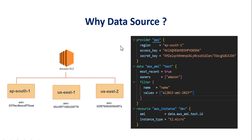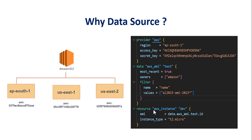Why should we use data sources? Suppose we have to create an EC2 instance across three regions: ap-south-1, us-east-1, and us-east-2. As we know, in AWS the AMI ID is region-specific. One approach is to hardcode the AMI ID in the resource block, but this is not best practice because these AMI IDs change over time. To avoid that, we can use a data source.